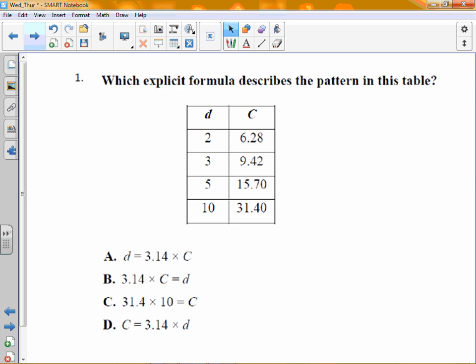It says which explicit formula describes the pattern in this table? Guys, it would be very easy to go, oh my gosh, I have no earthly idea what they mean by explicit formula. But if you look at it, you notice the formula that we're using here is just a formula form. It's a circumference of a circle, but 3.14 is like pi.